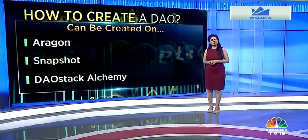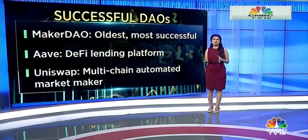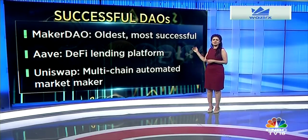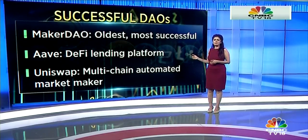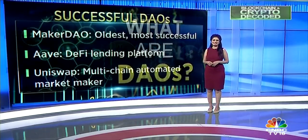Let's take a look at some of the established DAOs in crypto. Some run incredibly detailed and open organizations that operate like large businesses. MakerDAO is one of the oldest, most successful DAOs on the market. Second is Aave, a DeFi lending platform on Ethereum. Third is Uniswap, a multi-chain AMM or automated market maker that has inspired a generation of DeFi projects.